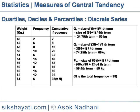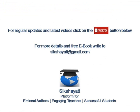Next, P60 is equal to size of the 60(N+1)/100 term, equal to 60 into (98+1)/100 term, equal to the 59.4th term, equal to 59 kg. Here N is equal to 98. Thank you for watching the video. Kindly write your comments.